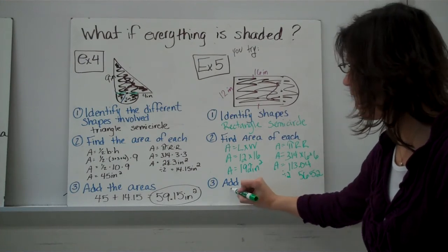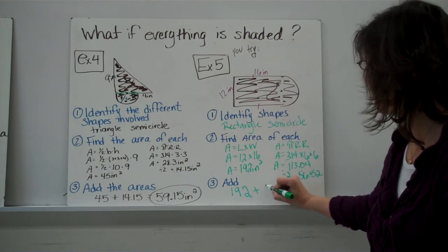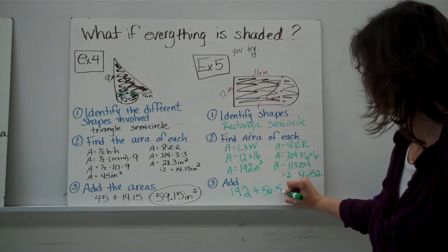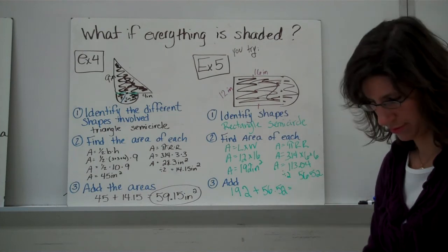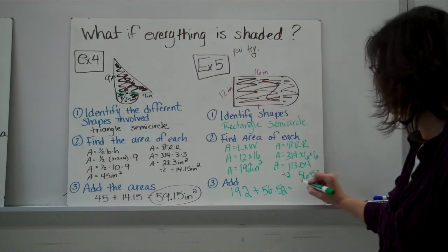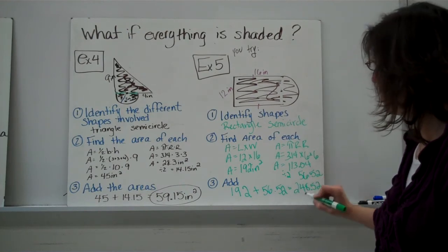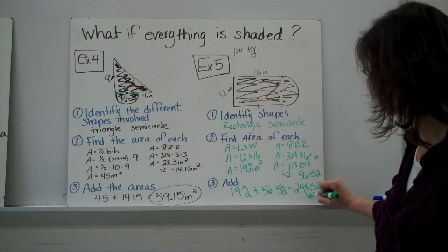All right, the last step is you're going to add those pieces. So you've got the rectangle plus the half circle, 248.52. Make sure you have your labels, inches squared.